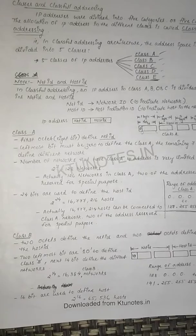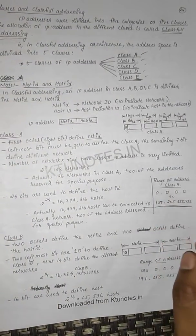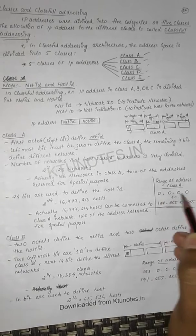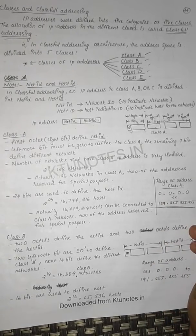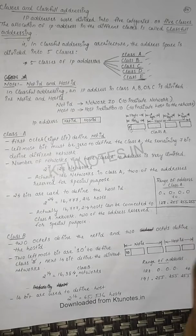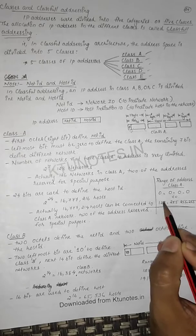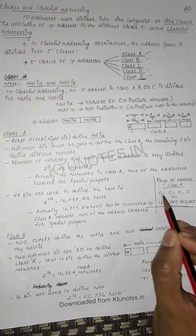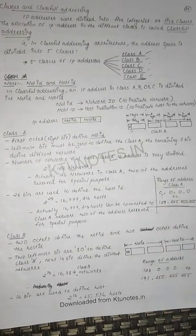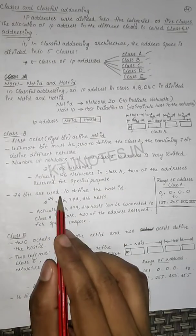The range of Class A addresses — in IPv4 — is 0 to 127. So this is the range of IP addresses for Class A.